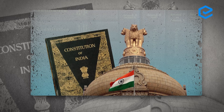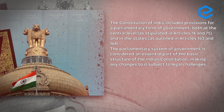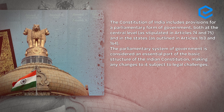The Constitution of India includes provisions for a parliamentary form of government at both central and state levels. The related articles are Article 74 and 75 for the center, and Article 163 and 164 for the states. The parliamentary system of government is considered an essential part of the basic structure of the Indian Constitution, making any changes to it subject to legal challenges. The parliamentary form of government is part of the basic structure — a concept given by the Supreme Court in the Keshavananda Bharati case.